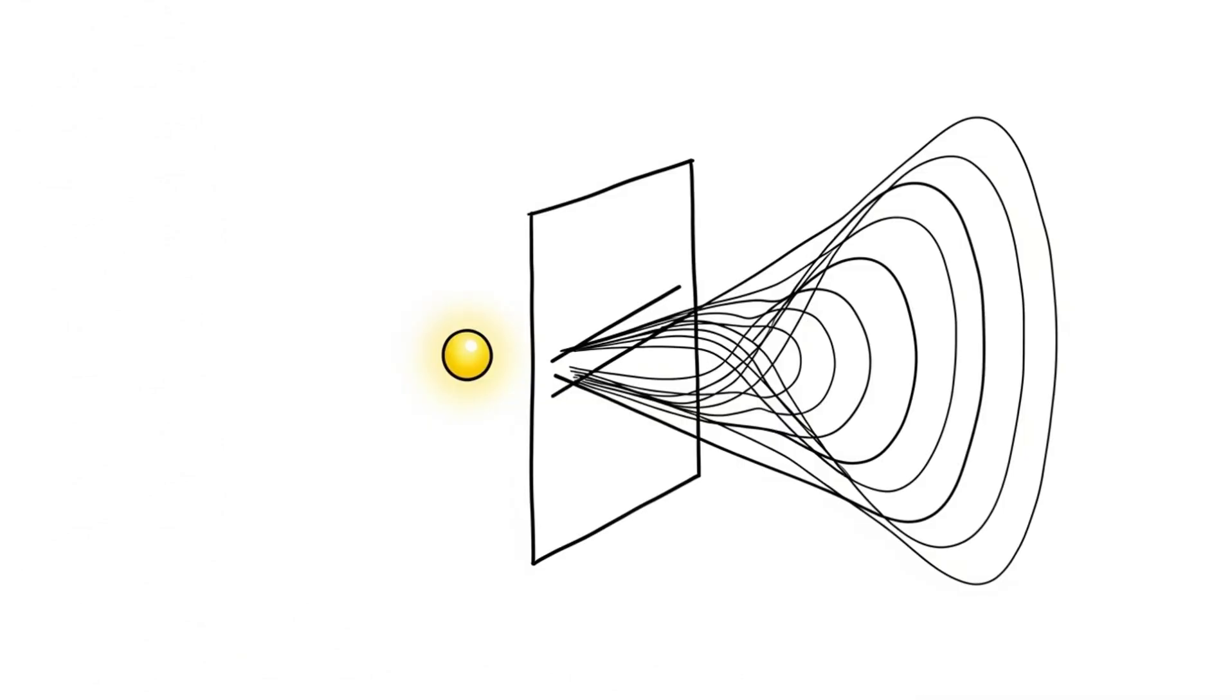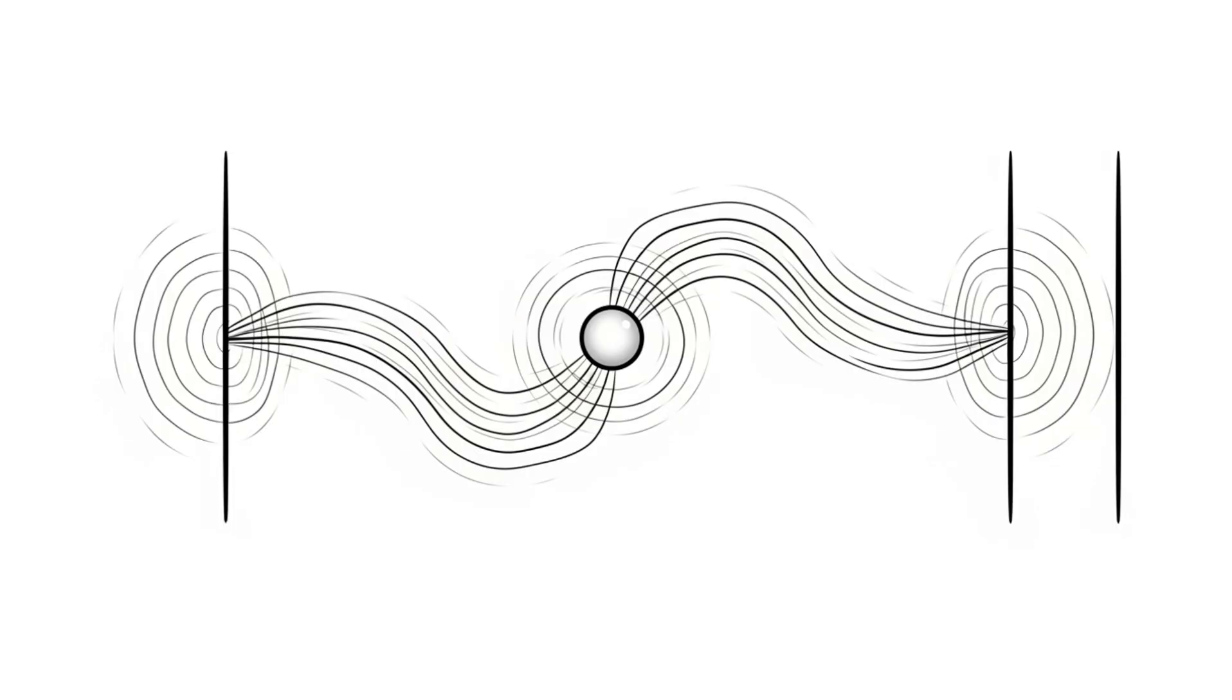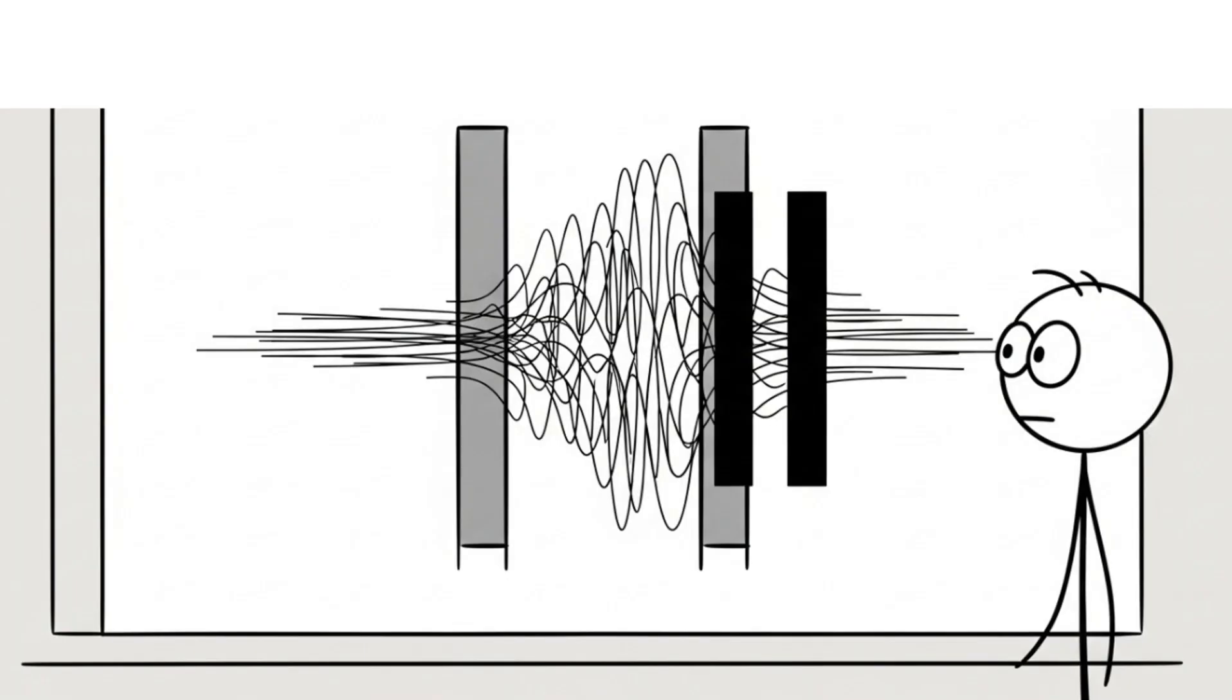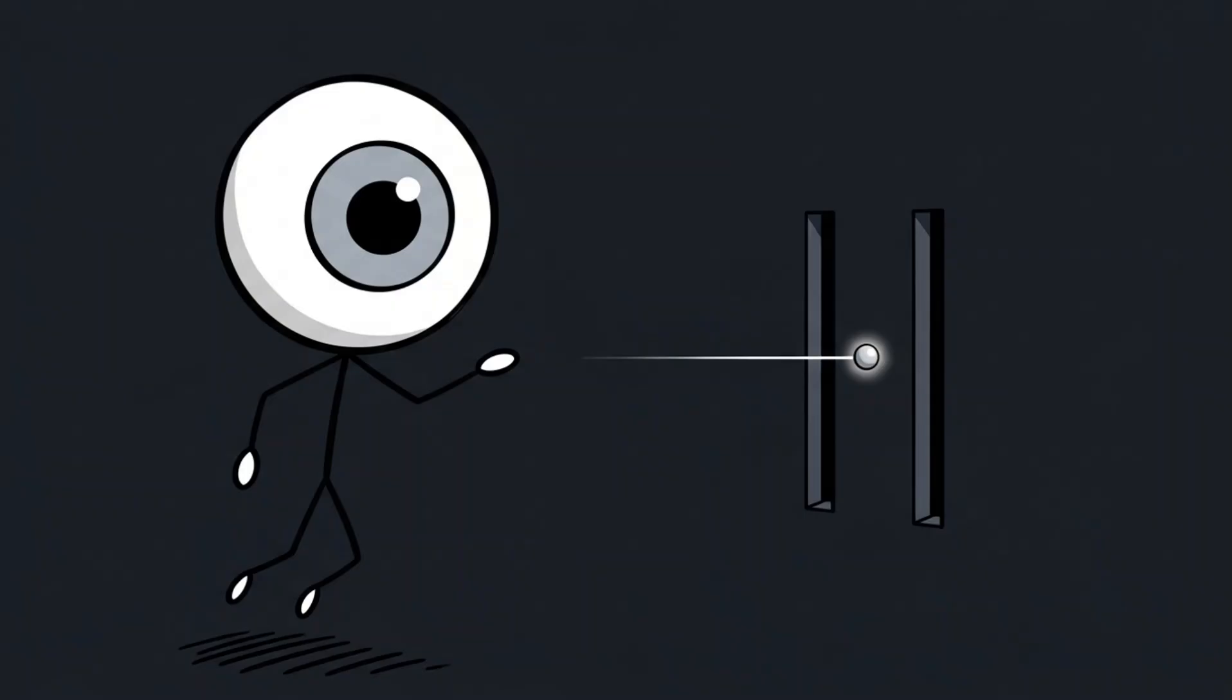Normally, the photons make an interference pattern, like ripples overlapping on water. That means the photon is behaving like a wave, going through both slits at once. But if you observe which slit the photon actually goes through, the interference disappears. The photon suddenly acts like a particle, going through only one slit.